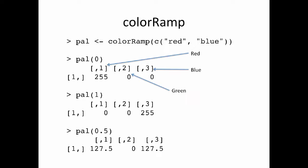What if I do pal(0.5)? This gives me a color in the middle of red and blue: 127.5 for red, 0 for green, and 127.5 for blue — so it's kind of half red, half blue, whatever that color happens to be. Notice there's no green in any of these calls because when you interpolate between red and blue, you don't encounter green along the way.